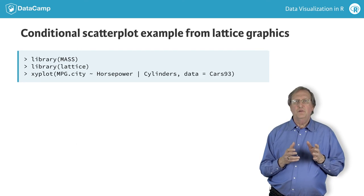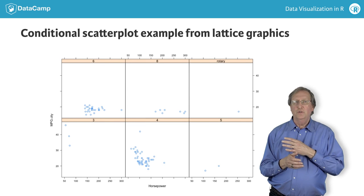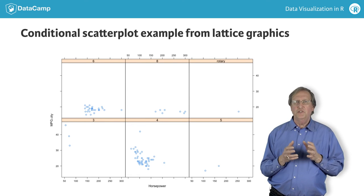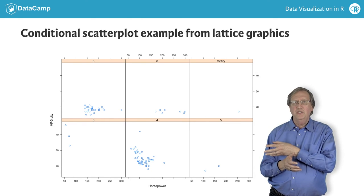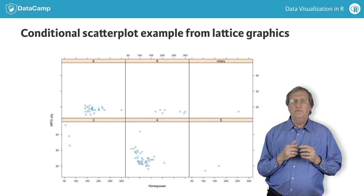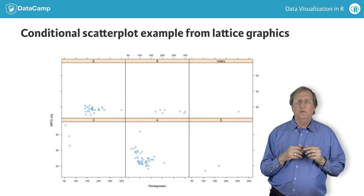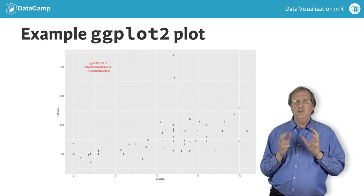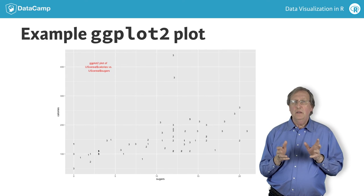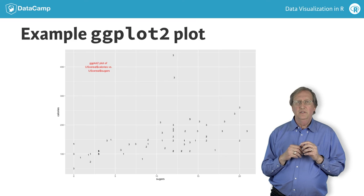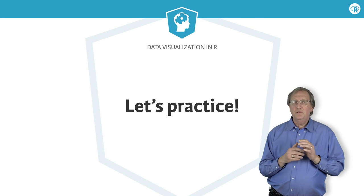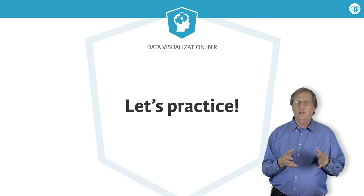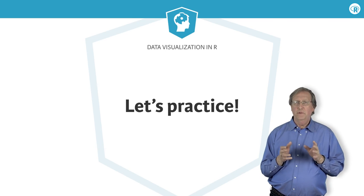This third example illustrates the use of the lattice package, which makes it easy to construct conditional scatter plots. These plots allow us to see how the relationship between the variables mpg city and horsepower from the CARS-93 data frame changes for different values of the cylinders variable. Finally, this fourth example gives a simple illustration of how the ggplot2 package can be used to build up more complex data displays by adding new details to a simple plot or modifying those details. Now it's your turn — the next few exercises will give you a chance to use the plot function for yourself and begin learning what you can do with base graphics in R.